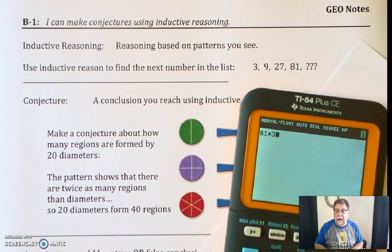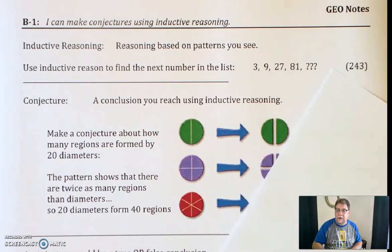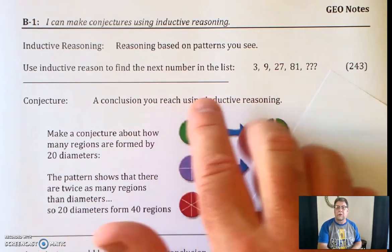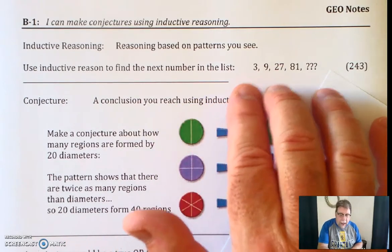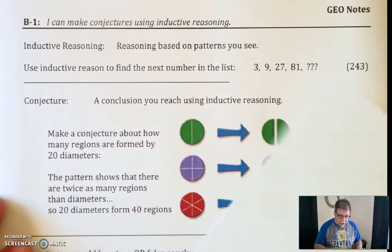81 times 3 is 243. And so that's where I get 243 would be the fifth term in this sequence, just using the idea of what's the pattern and continuing that pattern. That's what inductive reasoning is.